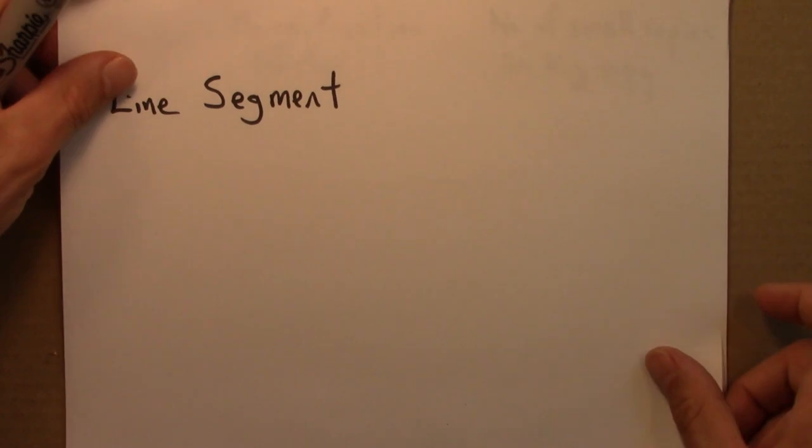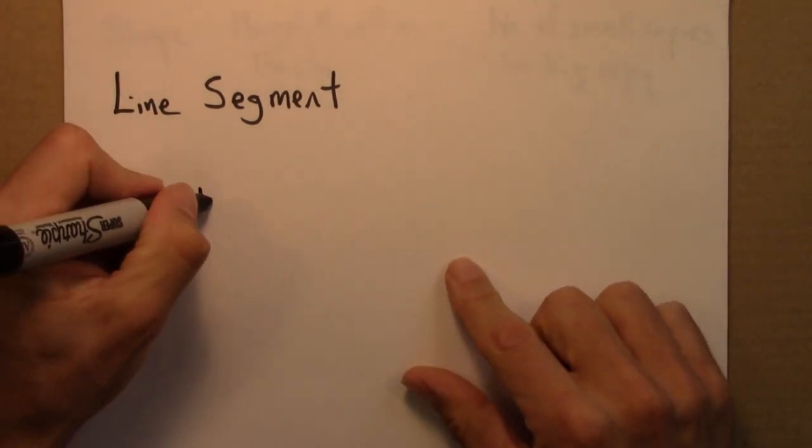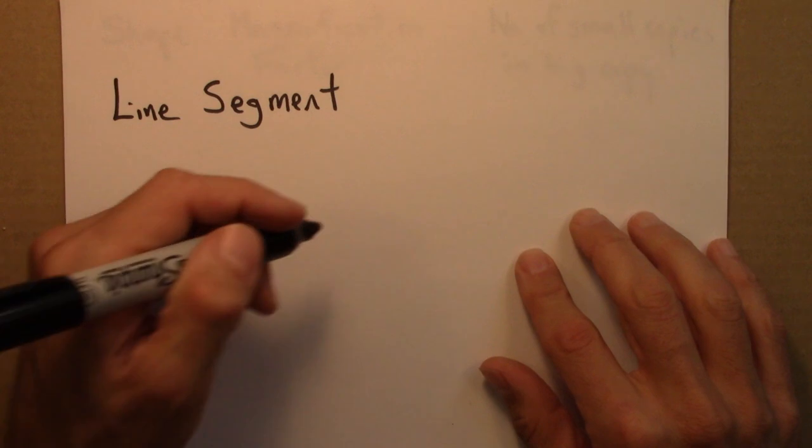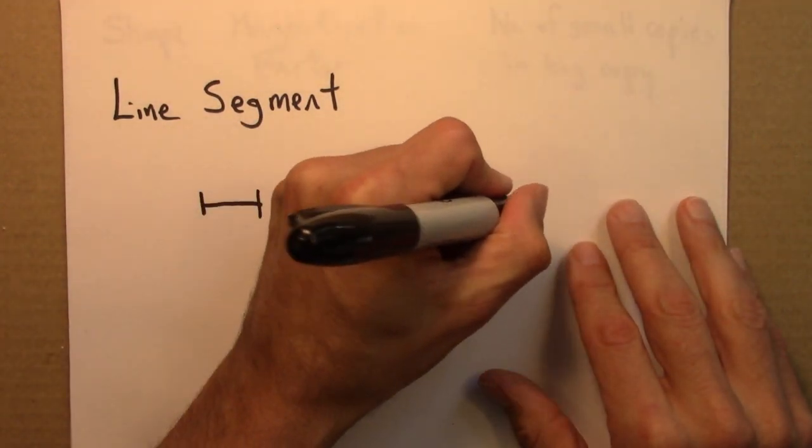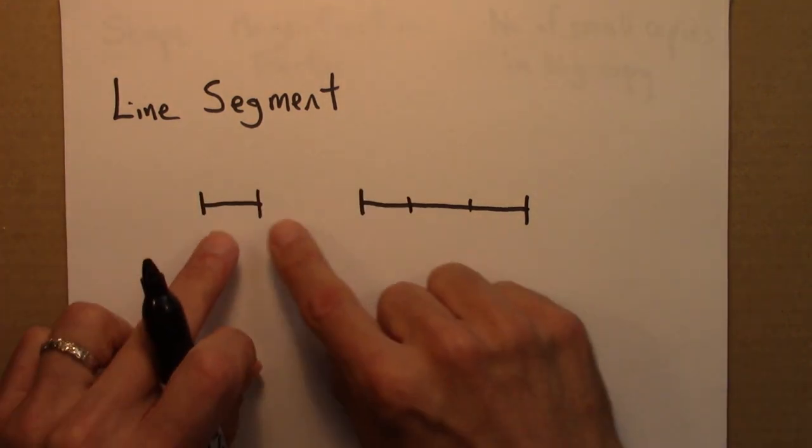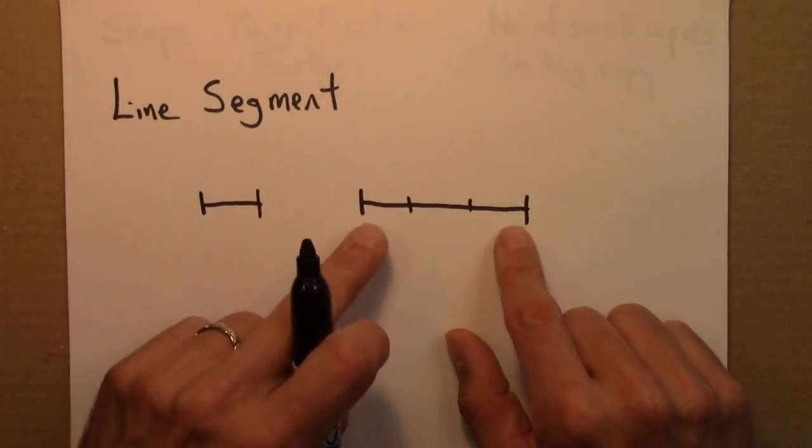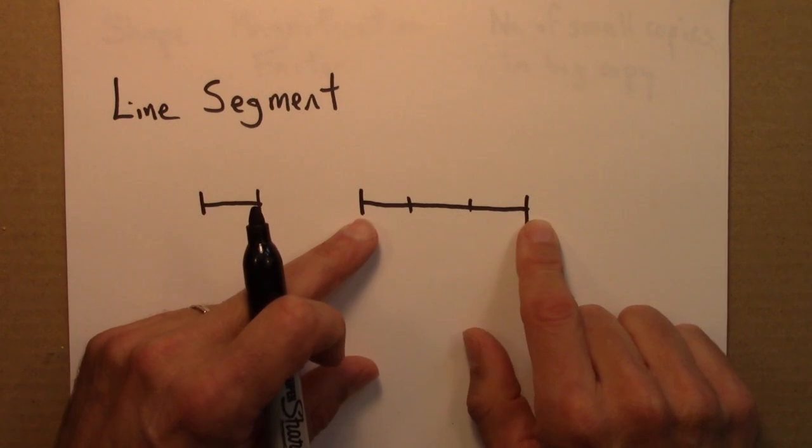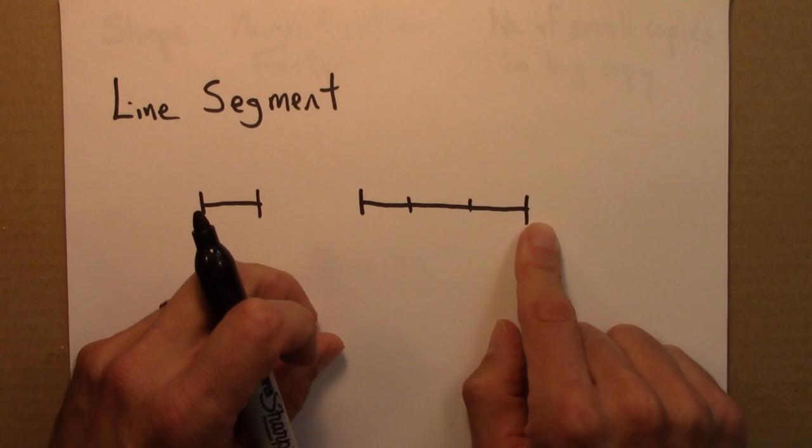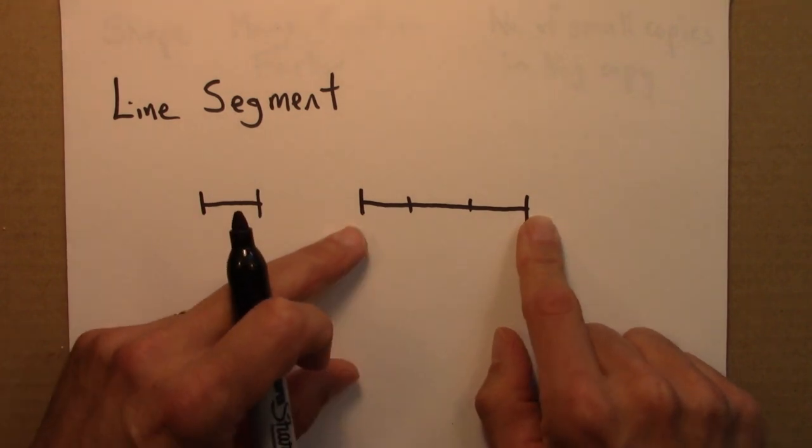Start by thinking about a line segment. So suppose I have a line segment like this. And then suppose I have a line segment that's three times as long. One, two, three. And I ask how many of the small line segments fit inside this line segment that's stretched by three. And the answer is three. One, two, three little line segments inside this big line segment.